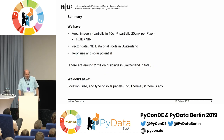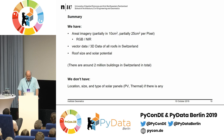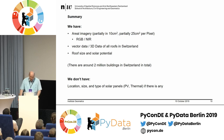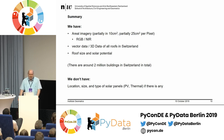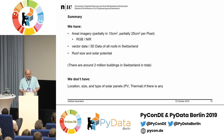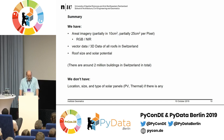So let's summarize what we have and what we want. We have aerial imagery, partially in 10 cm resolution per pixel, RGB and near-infrared. We have lots of vector and 3D data of all roofs and buildings in Switzerland — roof size and solar potential of every building. We have around 2 million buildings, so counting them manually would be lots of work. What we need is the location, size, and type of solar panel, if any, on those 2 million roofs.